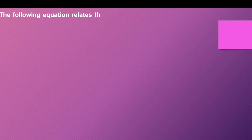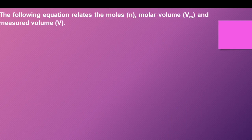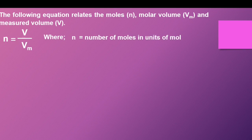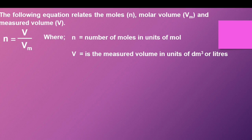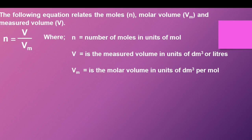The following equation relates the moles, molar volume Vm, and the measured volume V: N is equal to V over Vm, where N is the number of moles in units of moles, V is the measured volume in units of cubic decimeters, and Vm is the molar volume in units of cubic decimeters per mole.